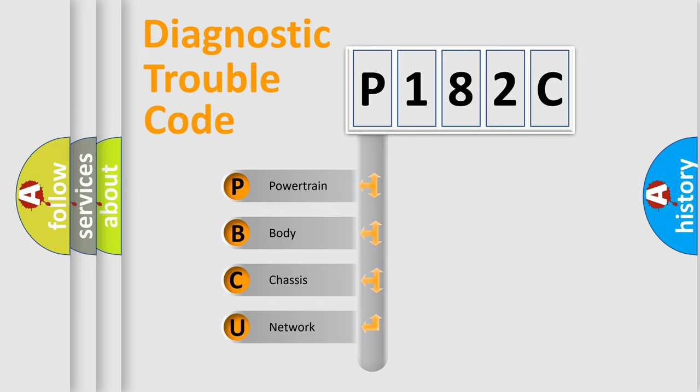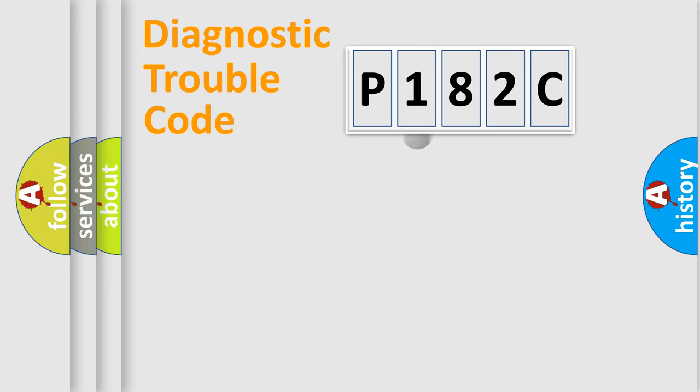We divide the electric system of automobile into four basic units: Powertrain, body, chassis, network. This distribution is defined in the first character code.